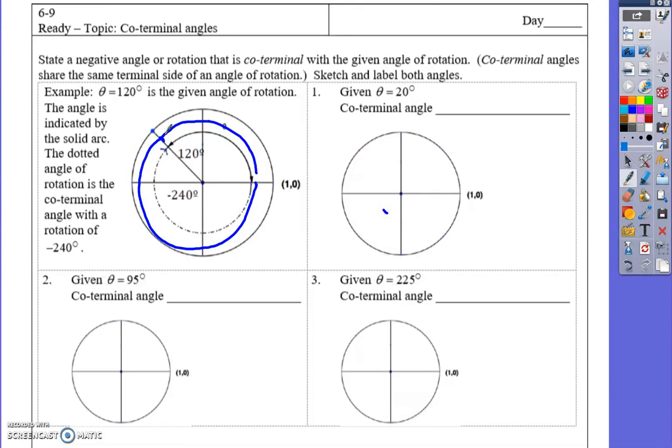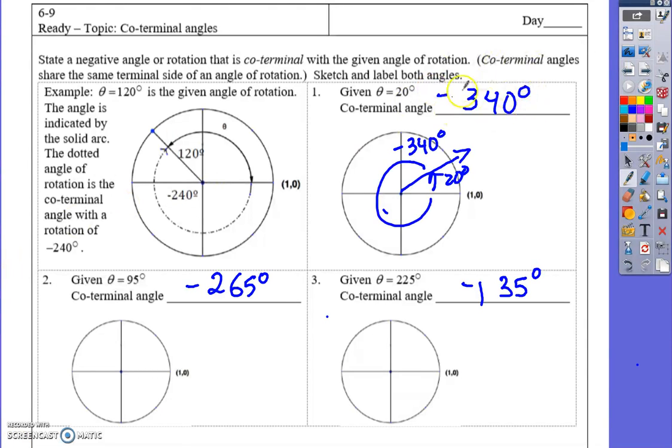So we're starting with theta equals 20 degrees. We should have negative 340 here and positive 20. Our picture has 20 here and then negative 340 going the other way. I didn't draw the rest of the sketches.